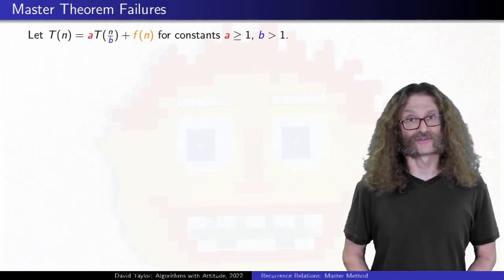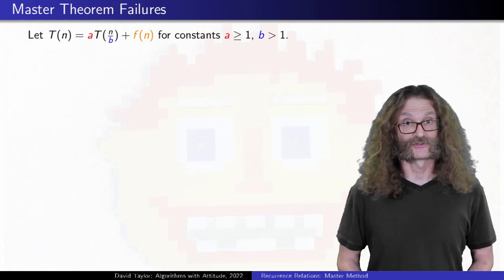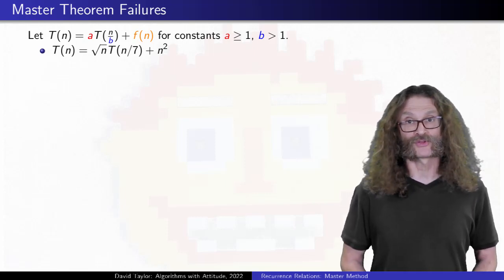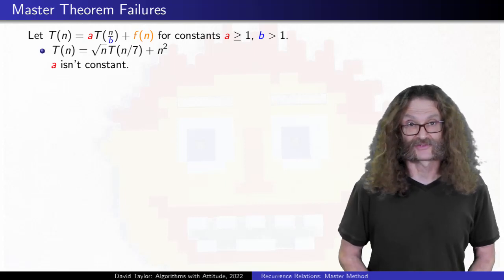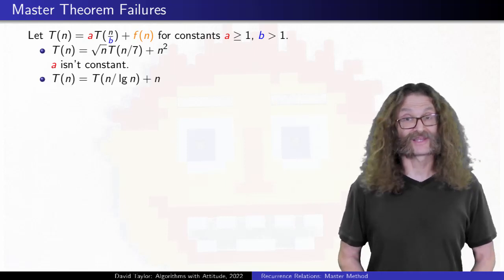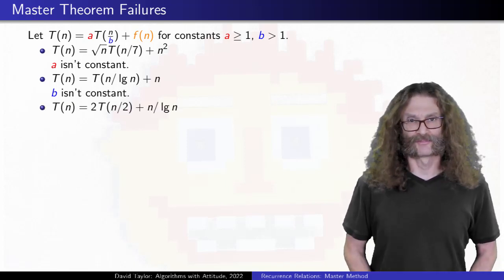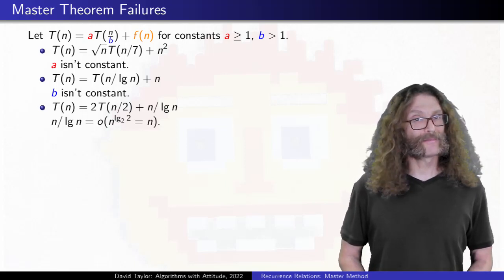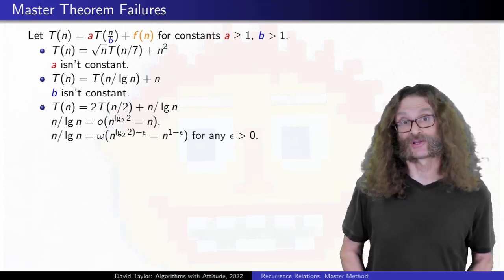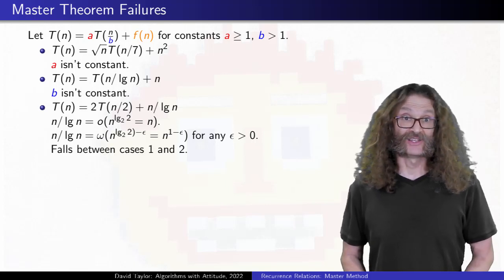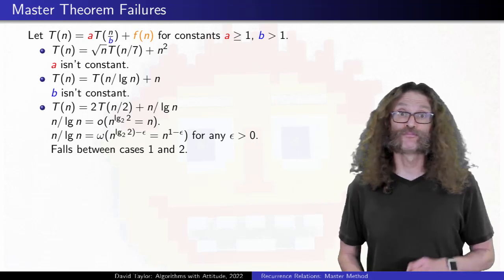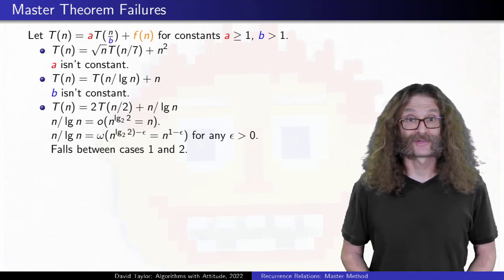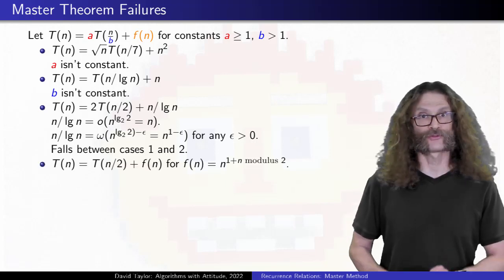It's interesting to consider cases when the master theorem fails to solve the recurrence because it doesn't apply. In this first example, it doesn't apply because it assumes that a and b are both constants, but here a isn't a constant. Similarly, the second example doesn't have a constant b divisor term. This third example is a bit more juicy. f is less than n to the 1, but it isn't polynomially smaller by some n to the epsilon factor, so that driving function is too small to fall into case 2 but too big to fall into case 1. It falls between those cases, so the master theorem can't tell you what the growth is.